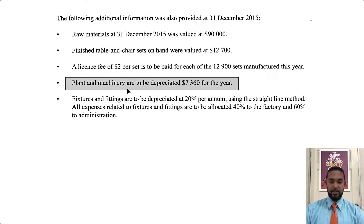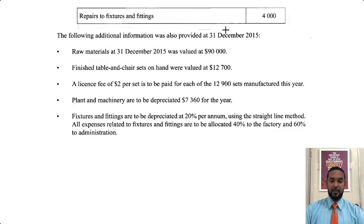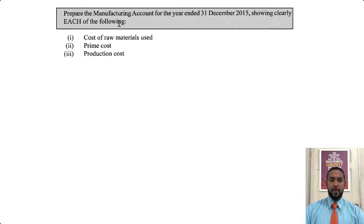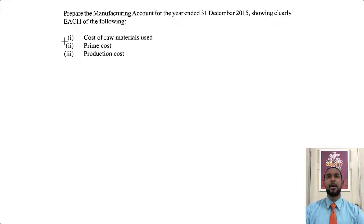Plant and machinery depreciation is given at $70,260 for the year, so we didn't have to calculate it. Fixtures and fittings are to be depreciated at 20% per annum using the straight line method. All expenses related to fixtures and fittings are to be allocated 40% to factory and 60% to admin — that's going to come into play later on. And they said all expenses, so we don't only have depreciation — we also have these repairs to fixtures and fittings. They want us to prepare the manufacturing account for the year ended 31st December 2015, showing clearly cost of raw materials used, prime cost, and production costs.